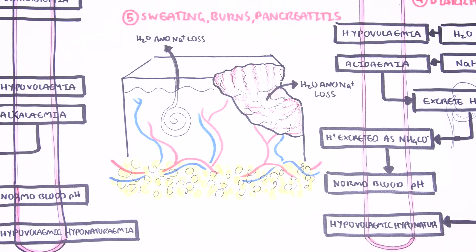That is why with sweating, burns, and pancreatitis you have low urine sodium levels. Those were the most important causes of pseudohyponatremia, hypervolemic hyponatremia, euvolemic hyponatremia, and hypovolemic hyponatremia.